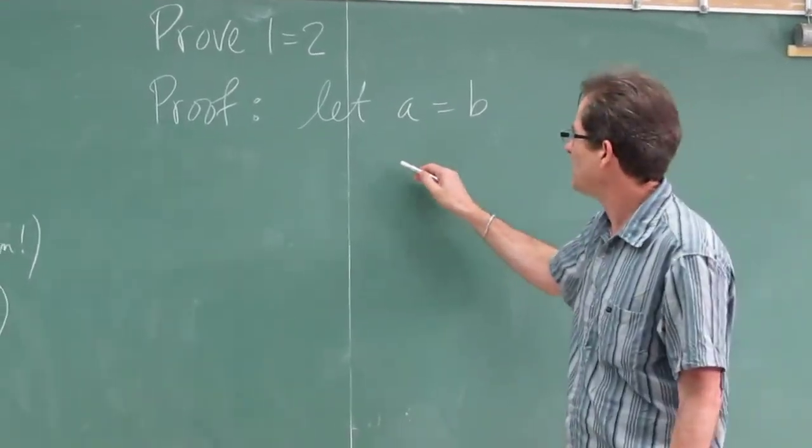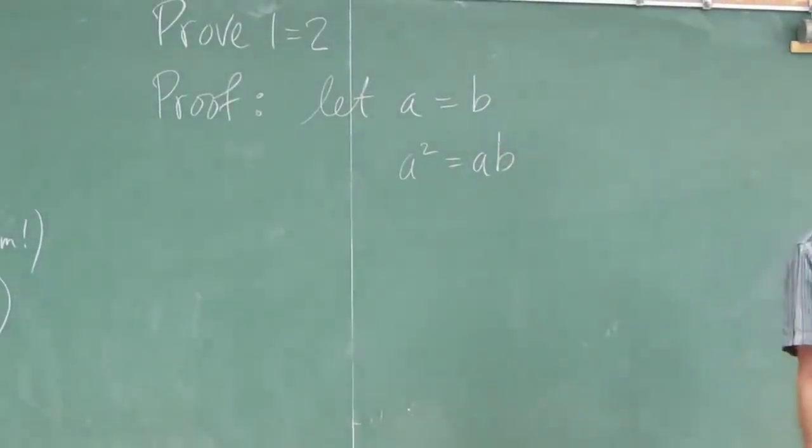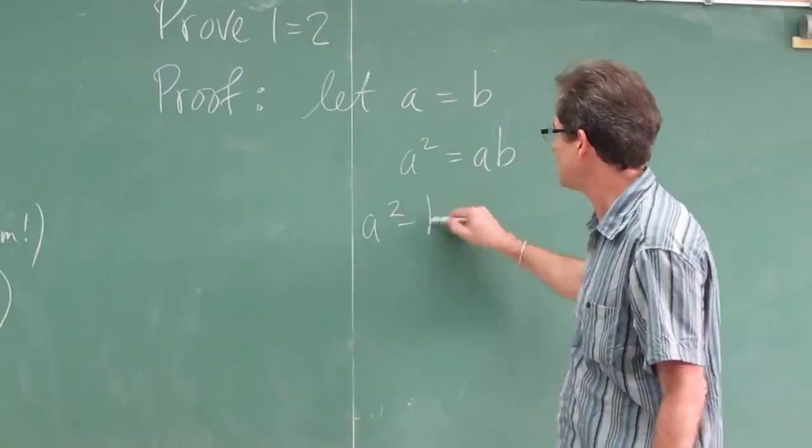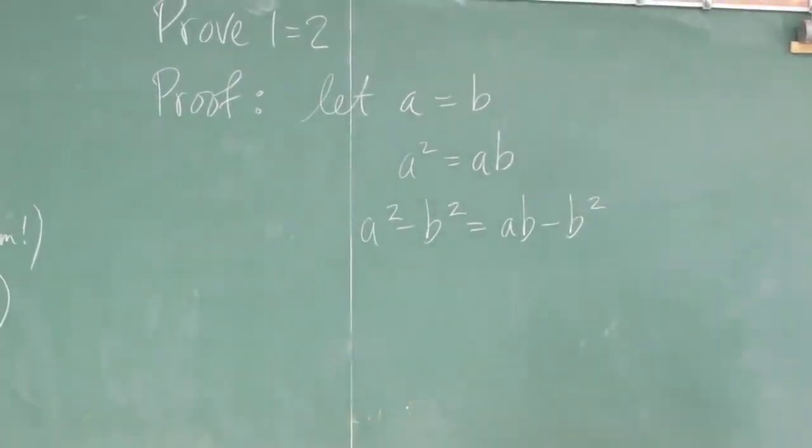Then, multiply both sides by a. You get a squared equals ab. Then, subtract b squared from both sides. All legal operations.